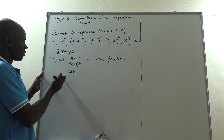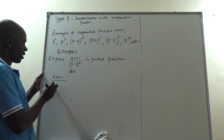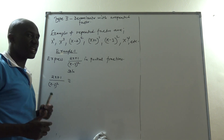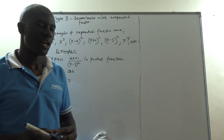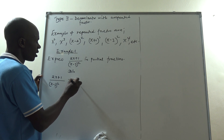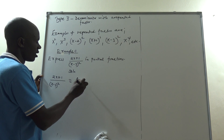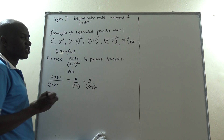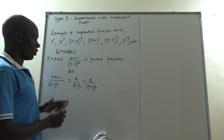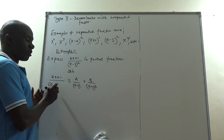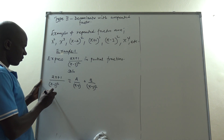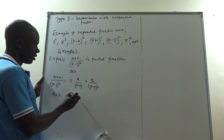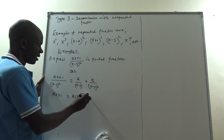So (2x plus 1) all over (x minus 3) squared is the same as A over (x minus 3) plus B over (x minus 3) squared. Since the expression inside the bracket is linear, we take the LCM, which gives us: 2x plus 1 equals A times (x minus 3) plus B.